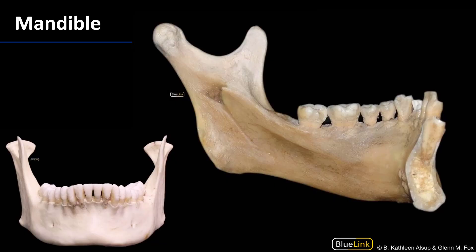Completing the skull is the mandible. Here is our anterior view of the mandible and here is a medial view of a hemisected mandible — we've cut through that mental region — and I want to share with you the mylohyoid line. The mylohyoid line is the attachment site for the mylohyoideus or mylohyoid muscle, which is the floor of the oral cavity. More importantly, that posterior part of the mylohyoid line is where the pterygomandibular raphe, which is the attachment site for the superior pharyngeal constrictor muscle, attaches.